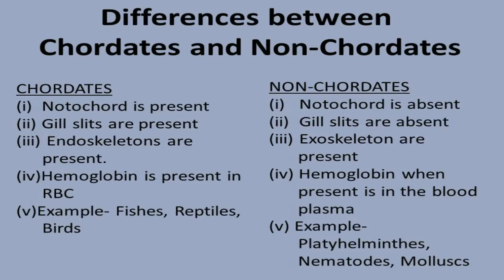If we talk about non-chordates, notochord is absent. Like you have seen the earthworm — it cannot sit upright because it has no support in its body. Notochord is absent. Gills are also absent. Exoskeletons are present, such as in arthropods like cockroaches.